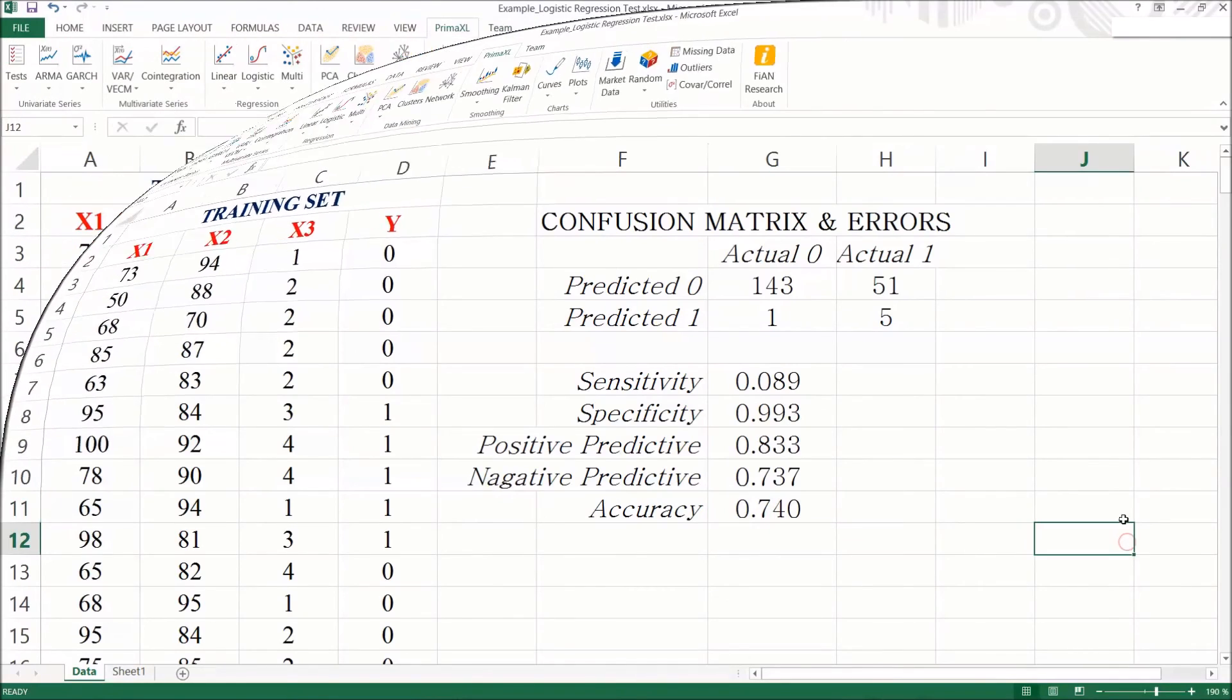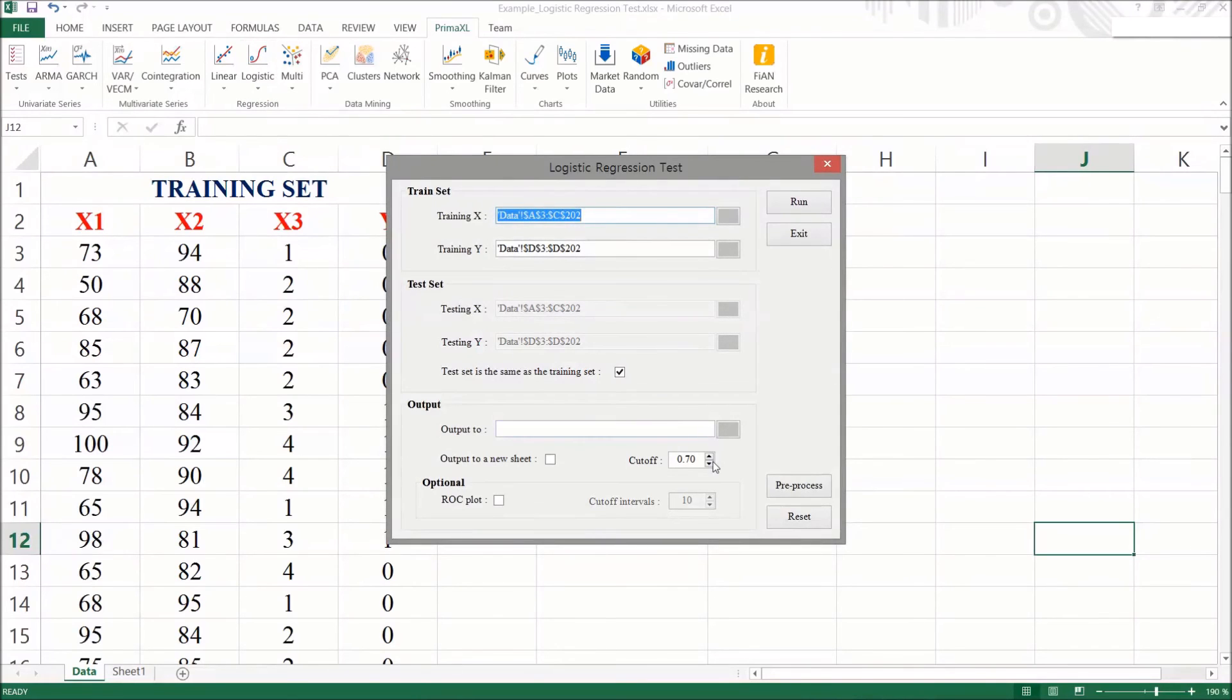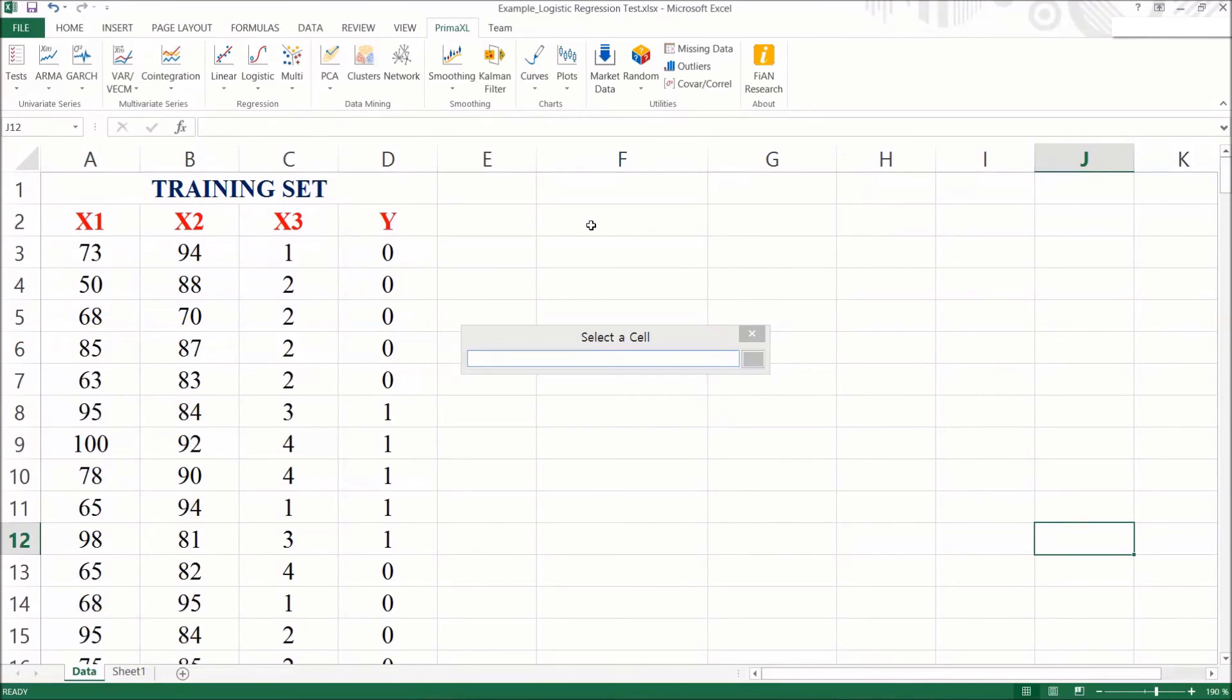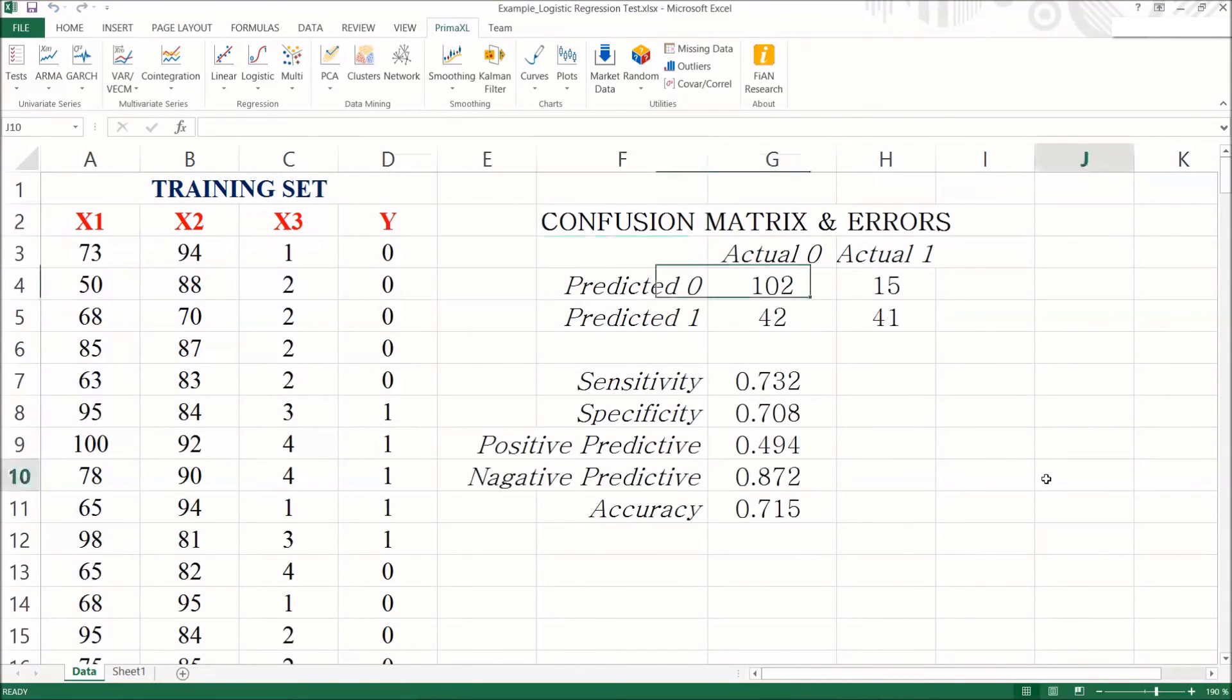Another run. Let's reset the cutoff to 0.3 and run. Here, the sensitivity increases while the specificity decreases and there is a slight decrease in the accuracy.